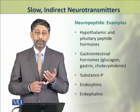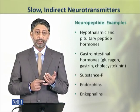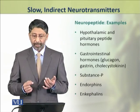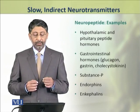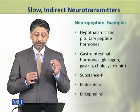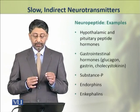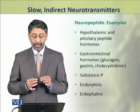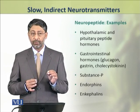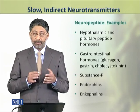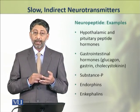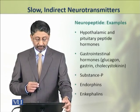Many hypothalamic and pituitary gland hormones are neuropeptides. Similarly, gastrointestinal hormones such as glucagon, insulin, gastrin, and cholecystokinin are also peptides. Substance P, endorphins, and enkephalins are also examples of neuropeptides.